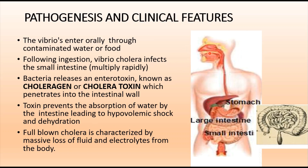In pathogenesis, vibrios enter orally through contaminated water or food. Following ingestion, Vibrio cholerae infects the small intestine and multiplies rapidly. It releases an enterotoxin known as choleragen or cholera toxin. This toxin is a protein that penetrates the intestinal wall and prevents absorption of water by the intestine, leading to hypovolemic shock and dehydration.